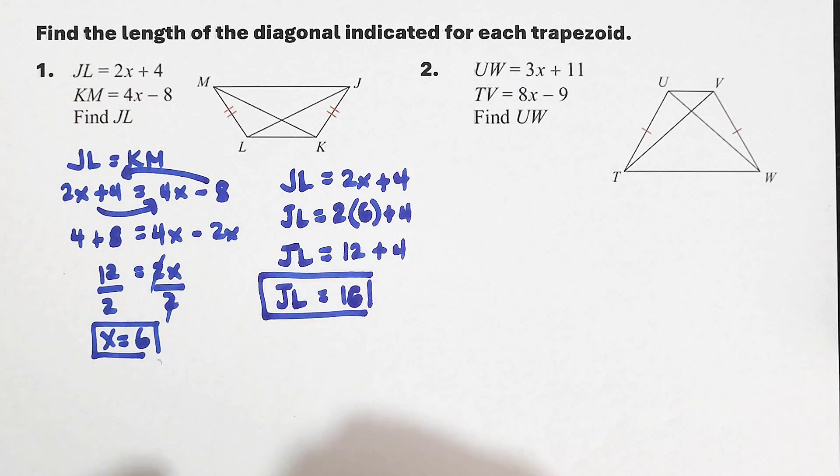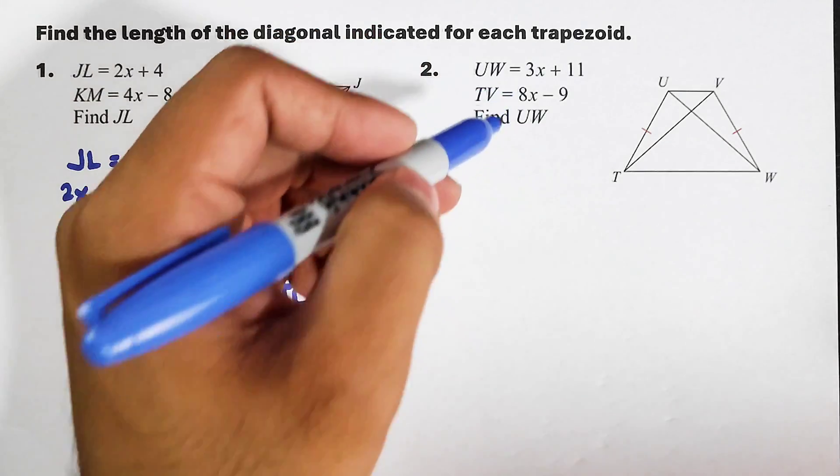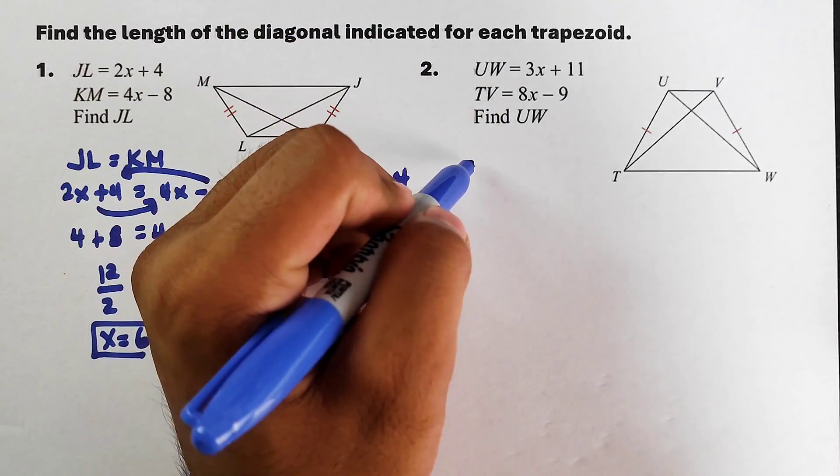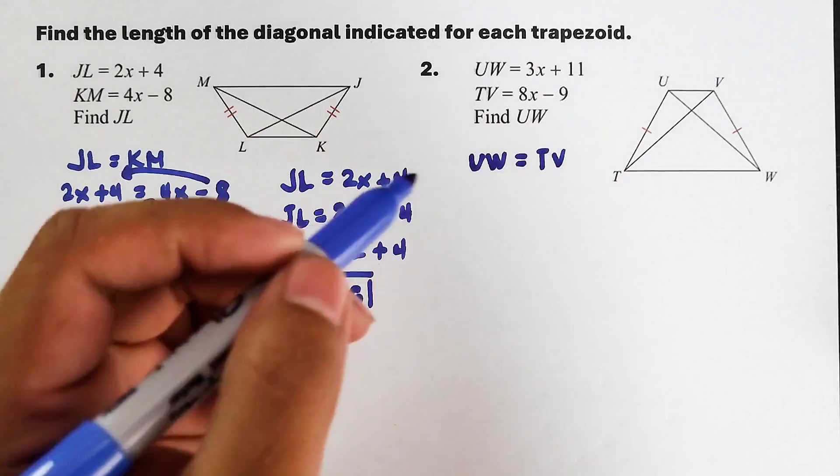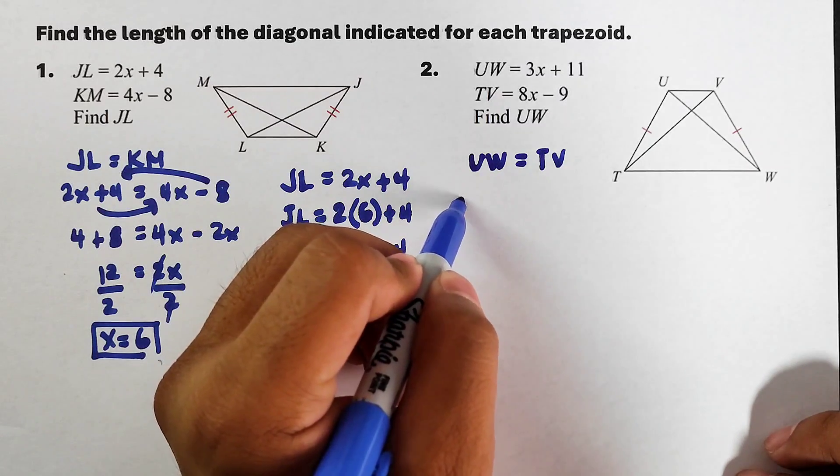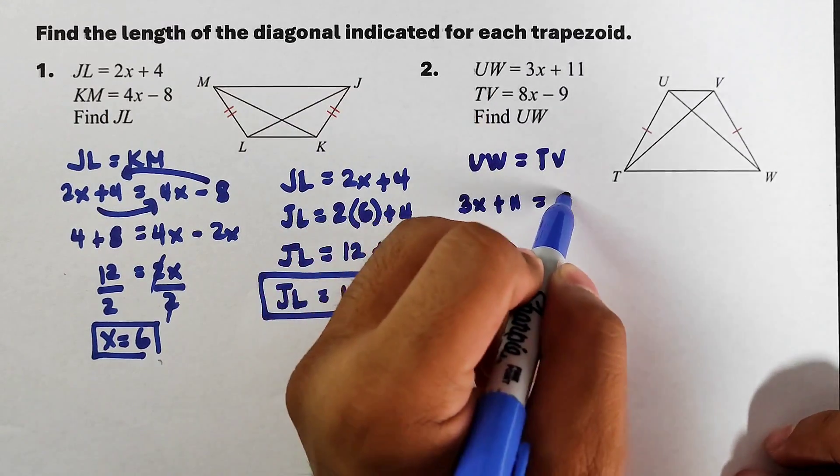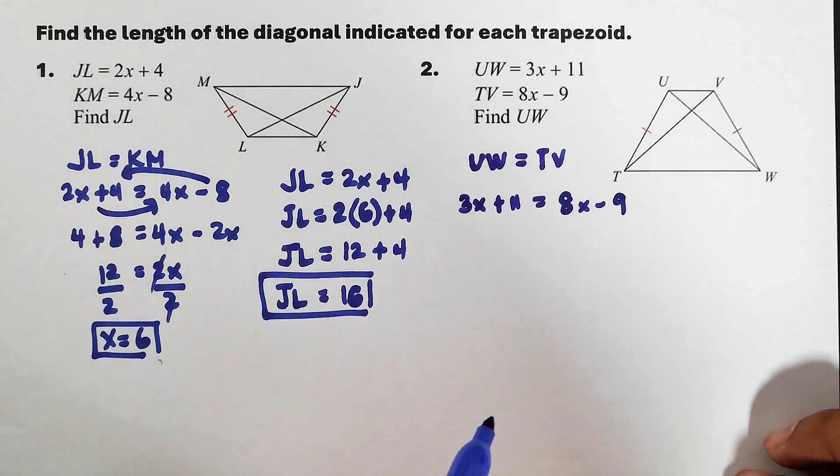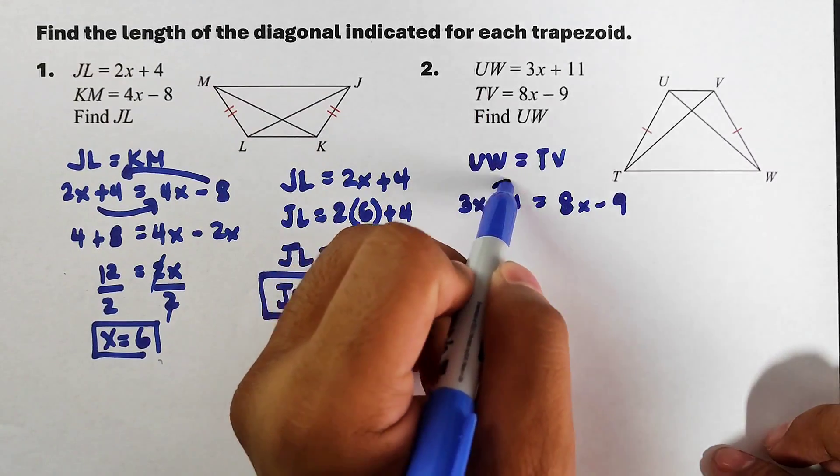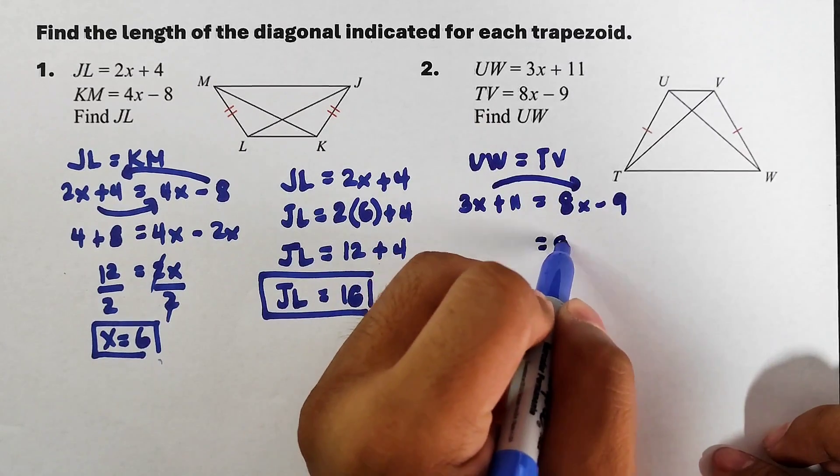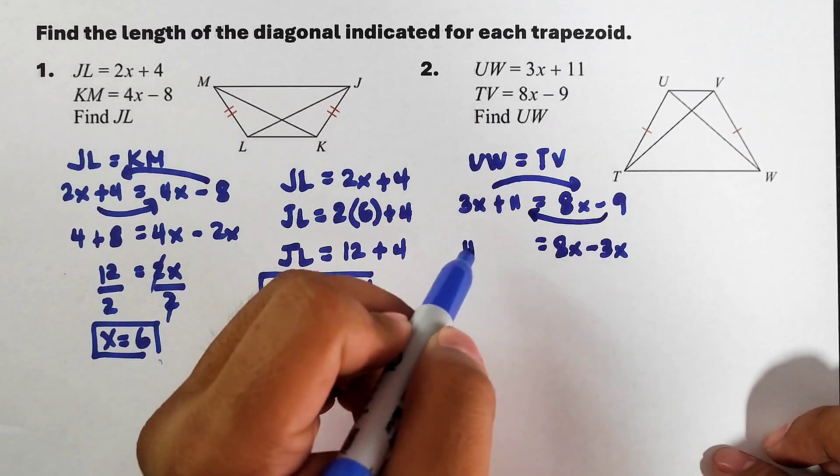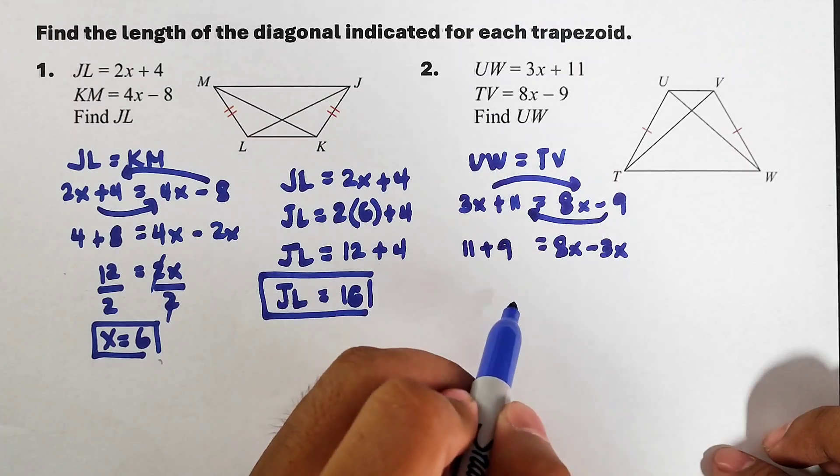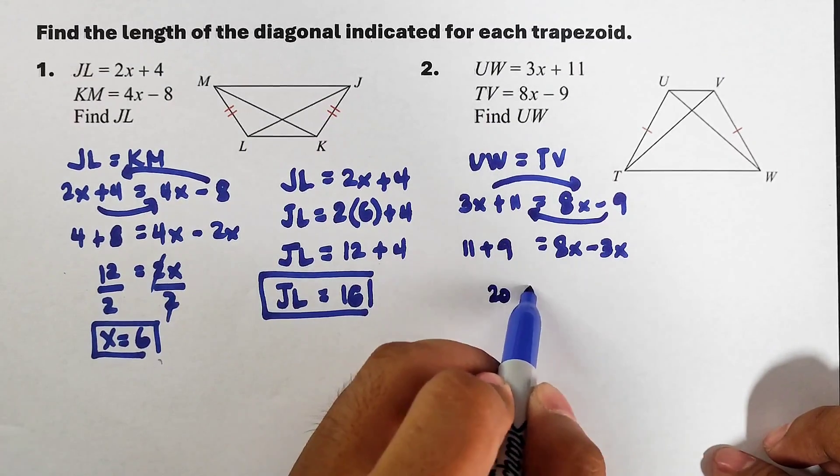Okay, now let's proceed with the last example. These are diagonals, so we could create an equation: UW equals TV. That would be 3x plus 11 equals 8x minus 9. We will transpose 3x to the other side. It will become 8x minus 3x.